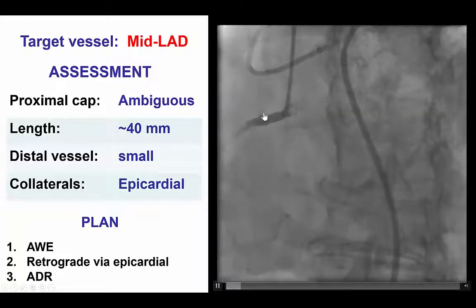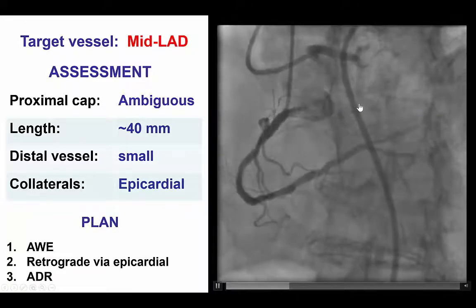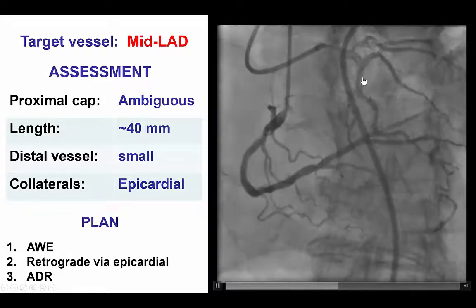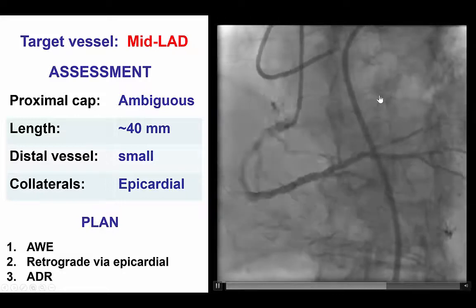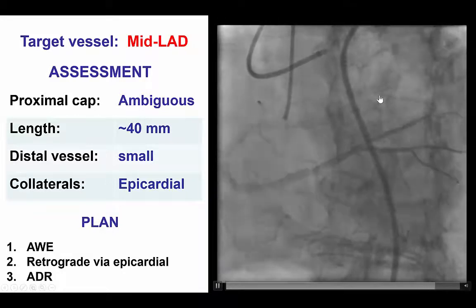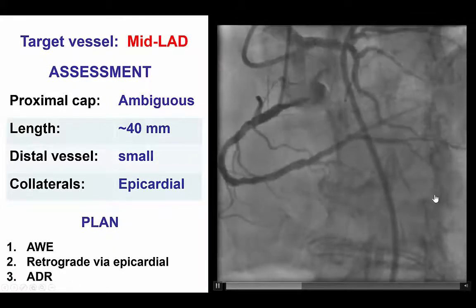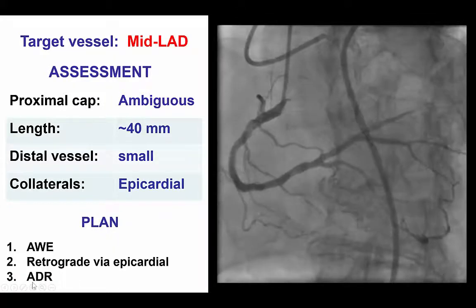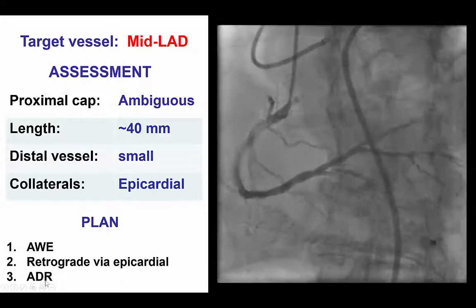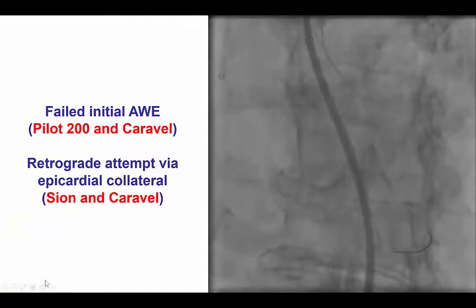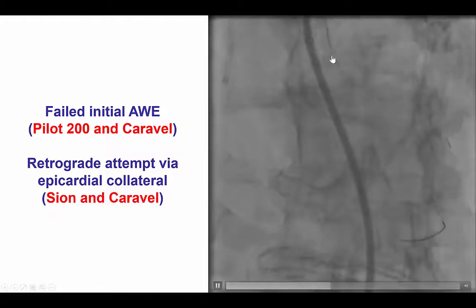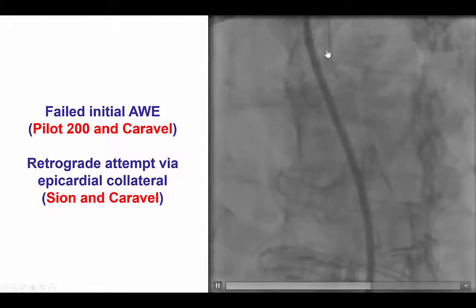Based on that, we decided to do a brief antegrade crossing attempt at the bend of the LAD stent, and if that did not work, then switch to a retrograde via the epicardial collateral, or do antegrade subintimal reentry if that failed as well. We did do an initial antegrade attempt, but we were unable to advance a guidewire through the previously placed stent, and therefore we changed to a retrograde attempt.